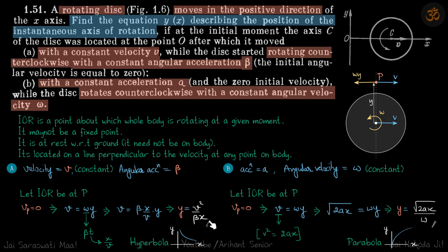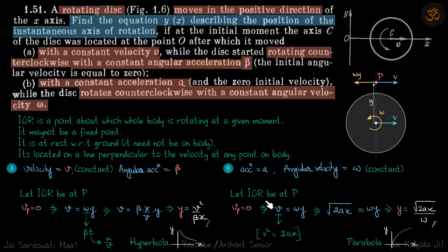So this is how the coordinates of the IOR vary with x. If you plot it, you can see that y is inversely proportional to x, giving a curve of the form y = v²/(βx), which is a hyperbola.